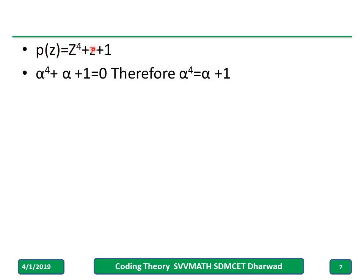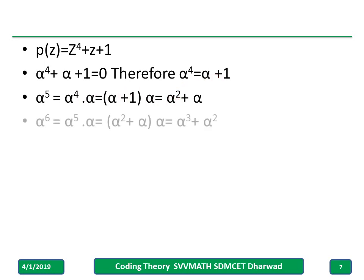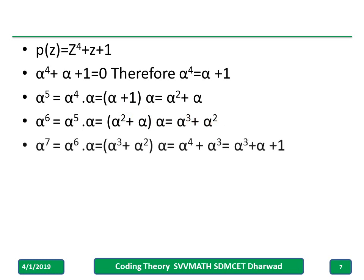Given z raised to 4 plus z plus 1, using primitive element alpha, I can write alpha raised to 4 plus alpha plus 1 equal to 0. Therefore, alpha raised to 4 equals alpha plus 1. Alpha raised to 5: multiplying alpha raised to 4 into alpha gives alpha squared plus alpha. Alpha raised to 6 equals alpha raised to 5 into alpha, giving alpha cubed plus alpha squared. Alpha raised to 7 equals alpha raised to 6 into alpha, filling in the alpha raised to 4 value, giving alpha cubed plus alpha plus 1.